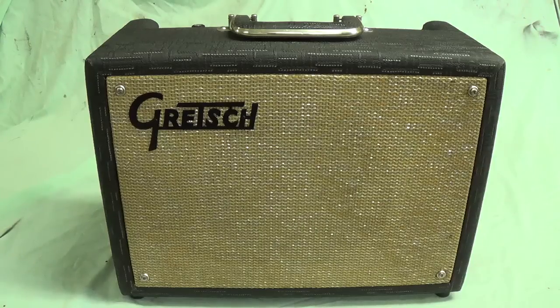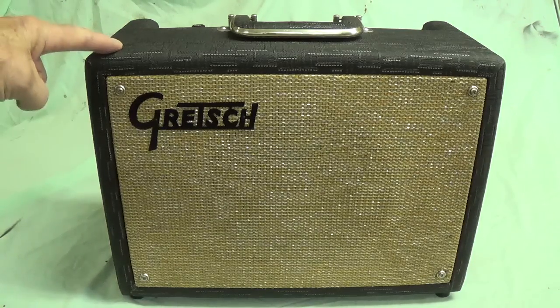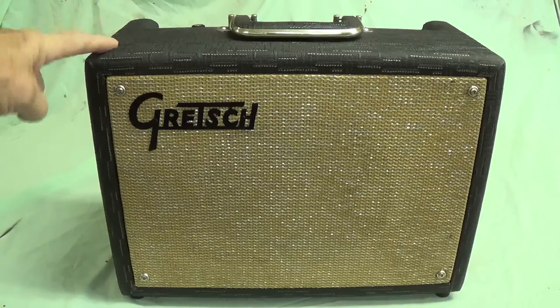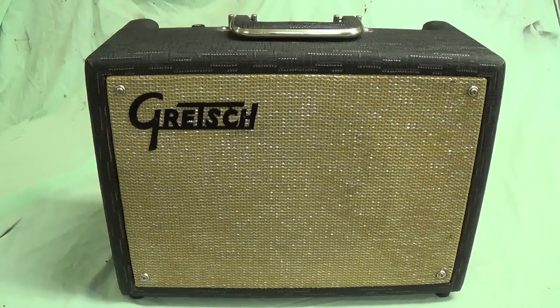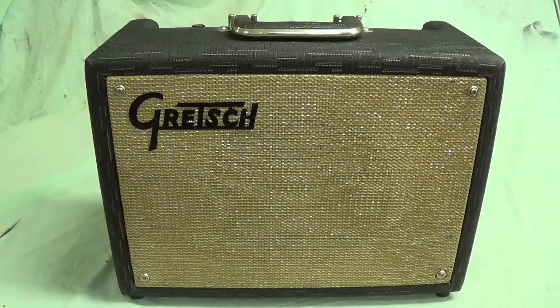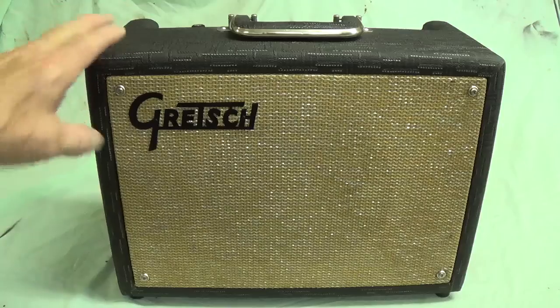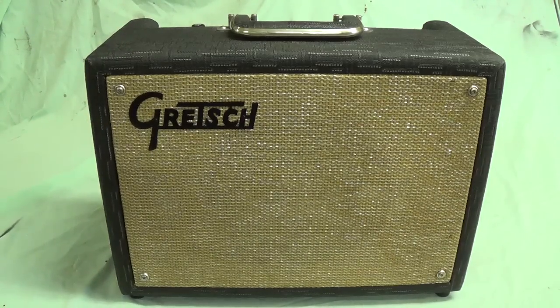Say we're out roaming the local pawn shops and thrift shops and we come up with this jewel right here, a nice old early 60s Gretsch 6150 amp. God only knows the last time it was plugged in or turned on, but we've been told that if we slowly warm it up with a variac it'll be very safe on the components and allow the electrolytic capacitors to reform.